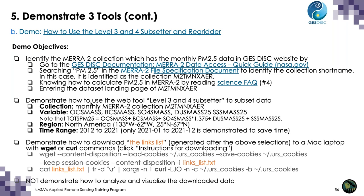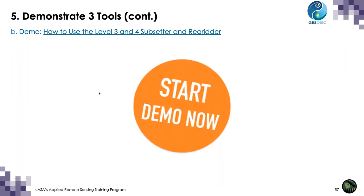Before starting the demo, let me clarify the demo objective. First, I will identify the MERRA-2 collection with monthly PM2.5 data from the GES DISC website. Next, I'll demonstrate how to use the Web Level 3 and Level 4 Subsetter to subset data, then show how to download the file. I will not demonstrate how to analyze and visualize the downloaded data — that will be covered by other instructors in Parts 2 and 3.